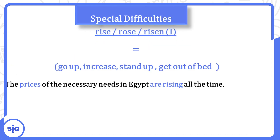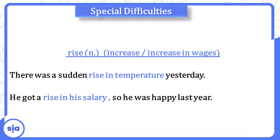Now 'rise' — an irregular verb: past: rose, past participle: risen. It means to go up, increase, stand up, or get out of bed. Example: The prices of necessary needs in Egypt are rising all the time — أسعار الحاجات الأساسية بترتفع. As a noun, 'rise' means an increase — زيادة. Example: There was a sudden rise in temperature yesterday. He got a rise in his salary — خد زيادة في المرتب.